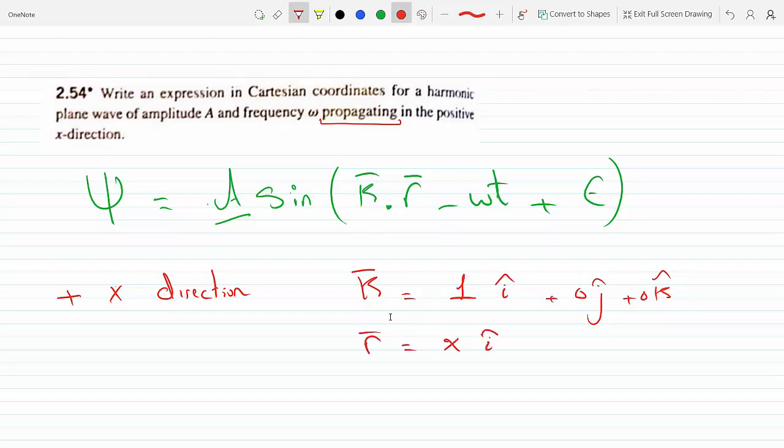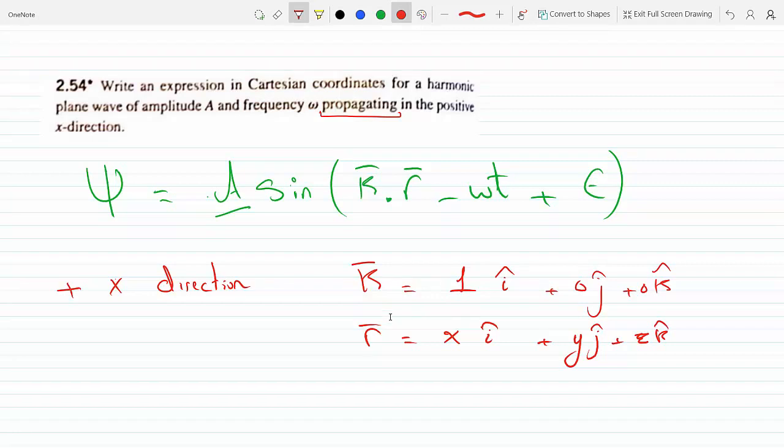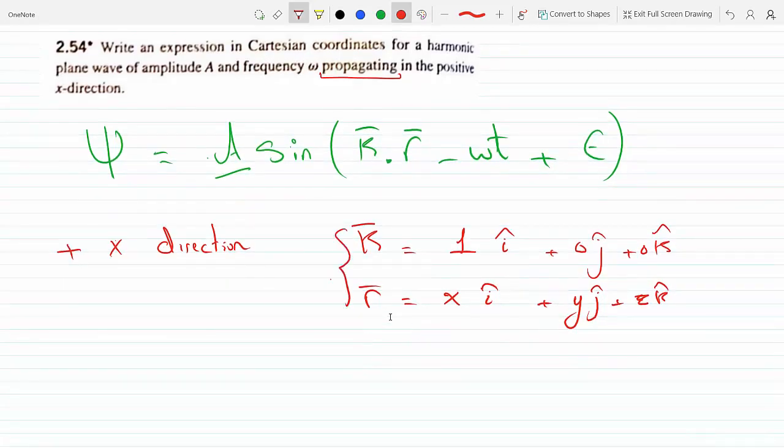And r is just any position vector anywhere in space: x i plus y j plus z k.